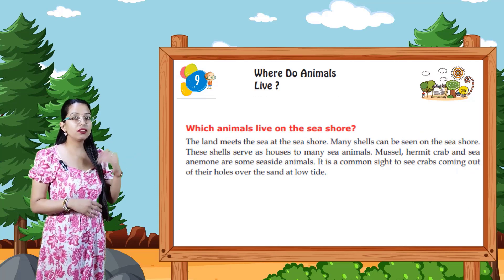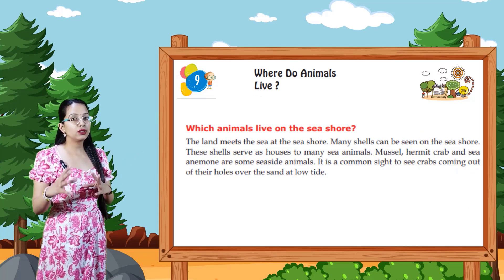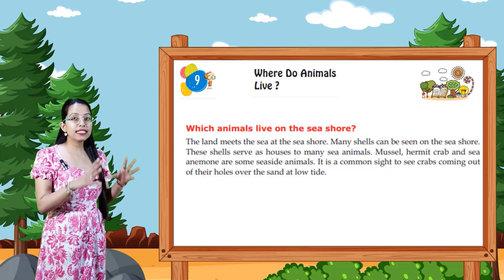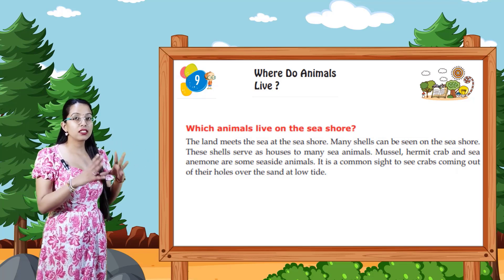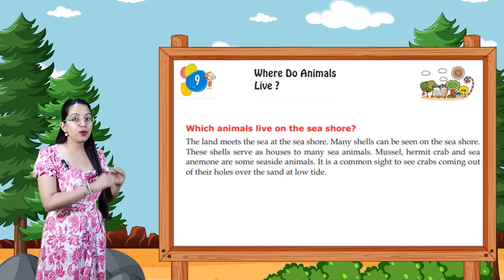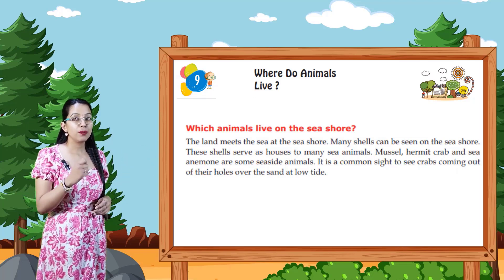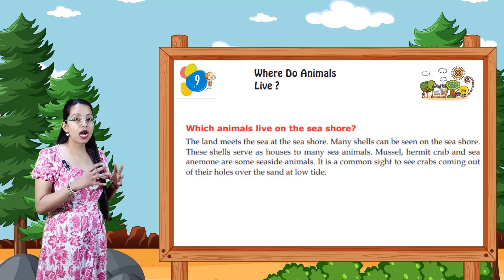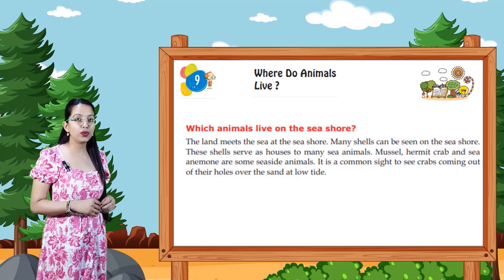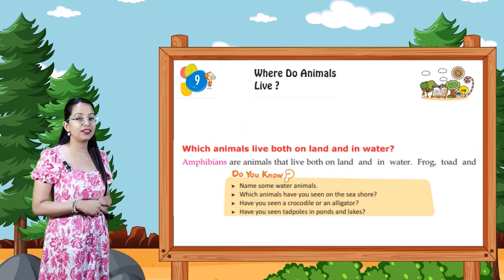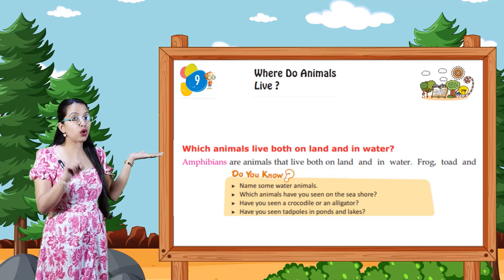Where the land meets the sea is called the sea shore. Many shells can be seen on the sea shore. These shells serve as houses to many sea animals. Mussels, hermit crab, and sea anemone are some seaside animals. It is a common sight to see crabs coming out of their holes over the sand at low tide.